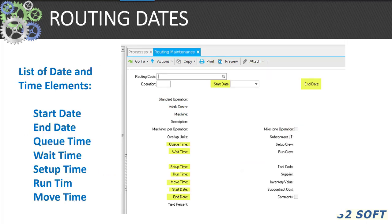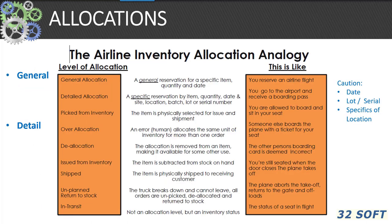Routing data determines the sequence of events of a manufacturing work order in work in process — this is critical for correct scheduling and execution of our QAD ERP system. The definition of routings allows for the statement of operation start and end dates, queue time, wait time, setup, run time, and move time.